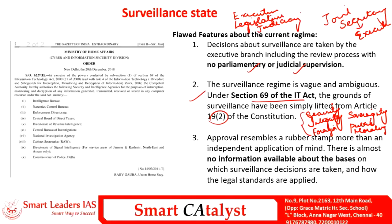We saw who has the power to approve surveillance and the flawed definition in Section 69. The third criticism is about the lack of information available about the basis on which surveillance decisions have been undertaken. There is also a lack of information over how legal standards in a democratic country are applied in the area of surveillance. These three are the criticisms against the existing surveillance regime in India.